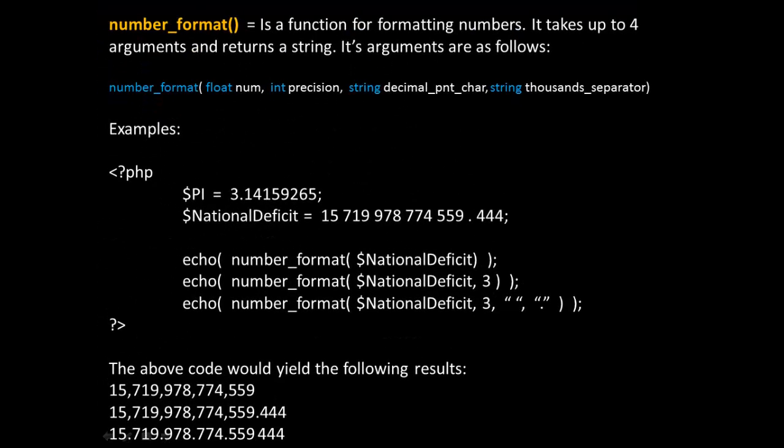While discussing how to display things in PHP, we should mention the number_format method. It's a function for formatting numbers, and it takes up to four arguments and returns a string. The first argument is the number you want to convert, the next is the precision, the third argument is the decimal point character, and the fourth argument is the thousands separator — so these can be changed. Looking at the following bit of code, we have two variables: pi and national deficit. The first call to the echo function just passes in the number to number_format, using system defaults — commas to the left of the decimal and a period for the decimal point.